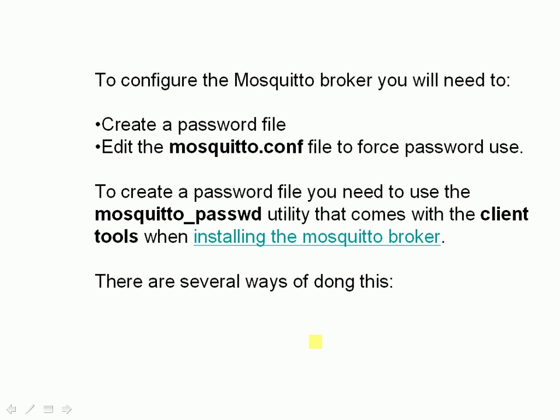To configure the Mosquitto broker you need to create a password file and then edit the mosquitto.conf file to force password use. Password use is forced on the broker, not on the client — the client has to comply with what the broker says. To create a password file you use the Mosquitto password utility that comes with the client tools, and I'm going to show you that on Windows and on Linux.